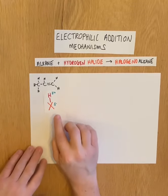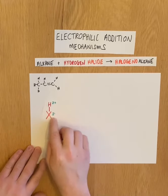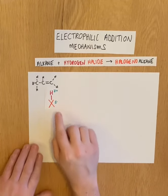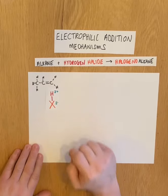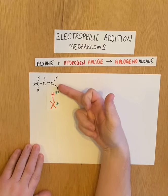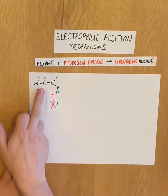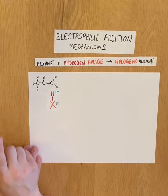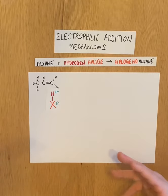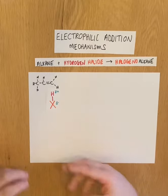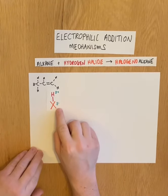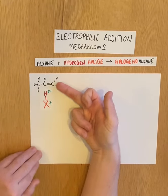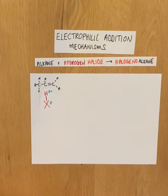If the hydrogen forms a bond to the carbon on the end, that carbon will then have three hydrogens and my carbocation will be on the middle carbon — a secondary carbocation, which is very stable and more likely to form. It's stable because of the positive inductive effect of alkyl groups on both sides stabilizing it. If instead the hydrogen were added to the middle carbon, a primary carbocation would form, which is less stable and less likely to form.